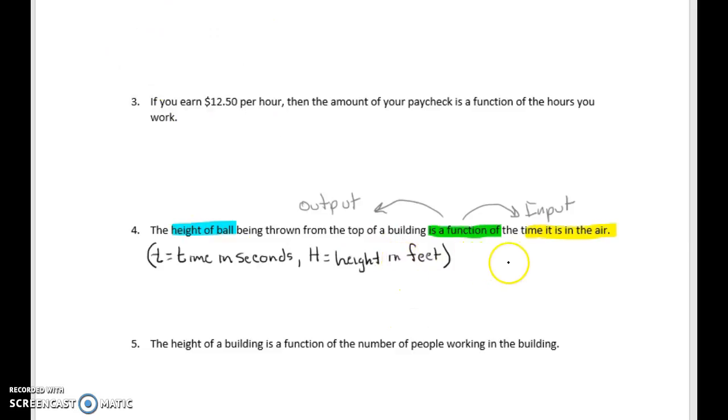Now we want to think about, for every time, for every second, is there a specific height as this ball is being thrown from the top of the building? Can there be a height different for the same time? Well, I don't think so.